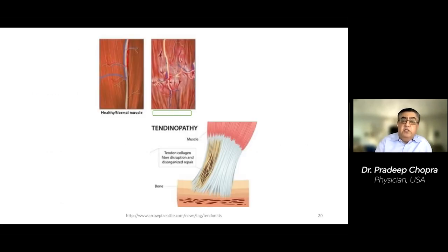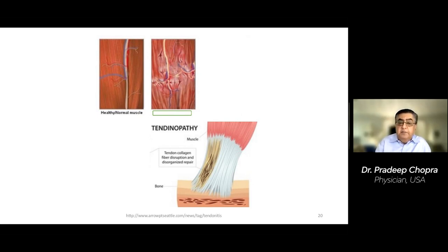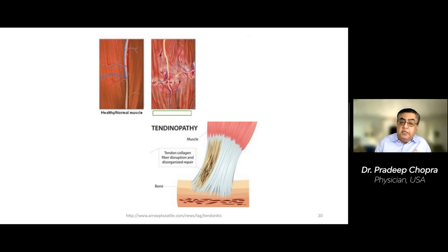On the left you can see a normal muscle; on the right, a muscle in EDS where there has been enough microtrauma and the muscle is completely damaged. At the bottom you can see a tendon, part of which is damaged. This is what you see in EDS — microscopic damage to the tissue and the tendons.